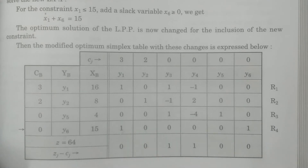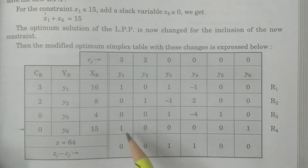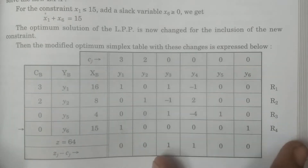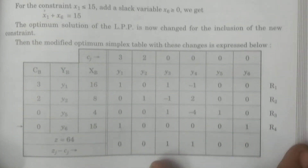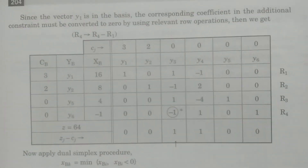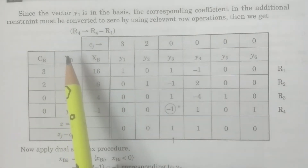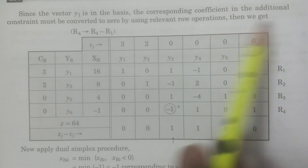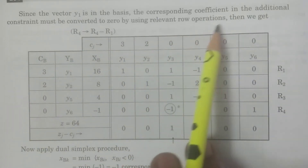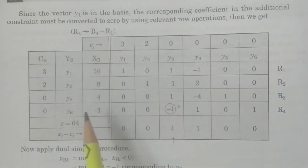That is a very important calculation. Since the vector y1 is in the basis, the corresponding coefficient in the additional constraint row must be converted to 0 by using the relevant row operation R4 = R4 − R1. This gives: 15 − 16 = −1, 1 − 1 = 0, and the remaining values are calculated accordingly.